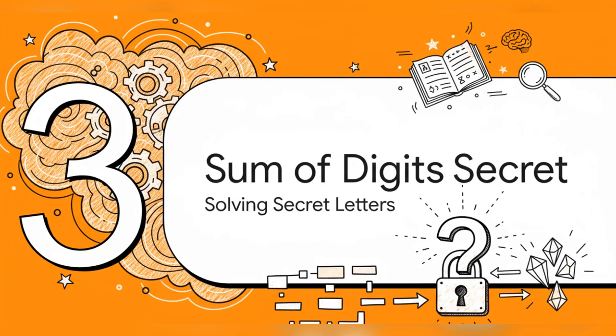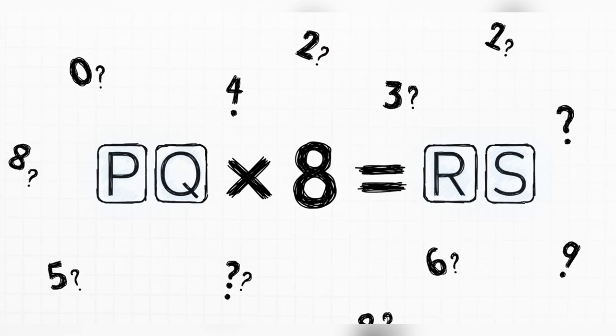Okay, so we've used some solid reasoning to pull back the curtain on these number tricks. But this same kind of logical thinking, it's also the key to cracking a totally different kind of puzzle. They're called cryptarithms. They're puzzles where every letter stands for a single unique digit from 0 to 9. The whole game is to figure out which letter is which number. So, let's take a look at this one. We've got a two-digit number, PQ, and when you multiply by 8, you get another two-digit number, RS.